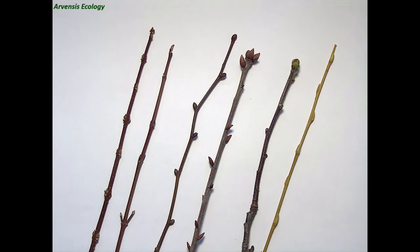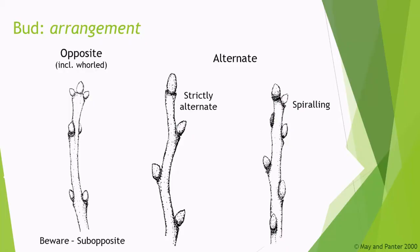We've got a selection of species here that show a variety of features useful for their identification. Firstly, the arrangement of their buds on the stem — are they opposite, so one bud either side, almost like a pair? Do they have alternate buds, so a strong left-right alternation? Or are they spiralling, so also left-right but on a spiral or helical form?